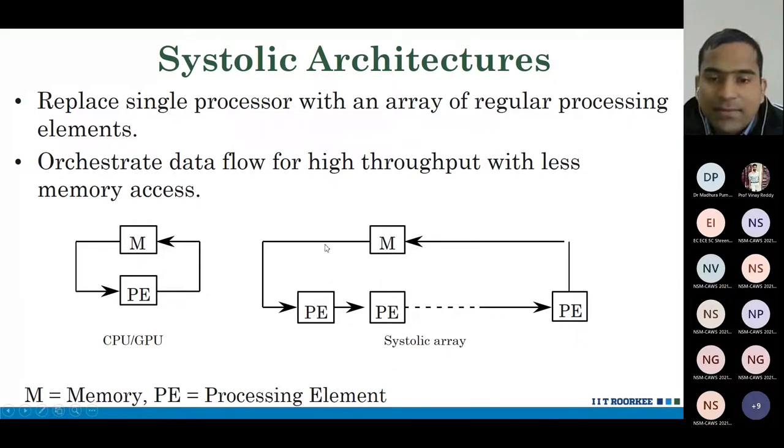The first PE reads it, passes the data to the next PE. This PE does not directly access the memory. And so on. Finally, the last PE gets the output and sends it or stores it in the memory.